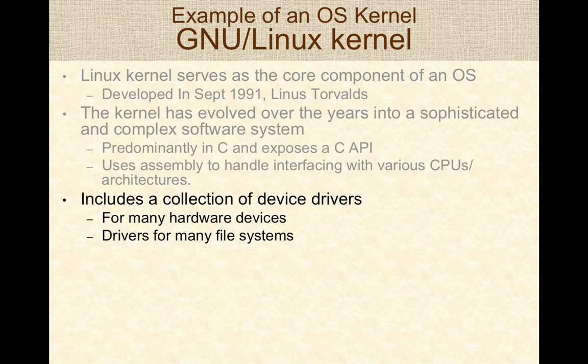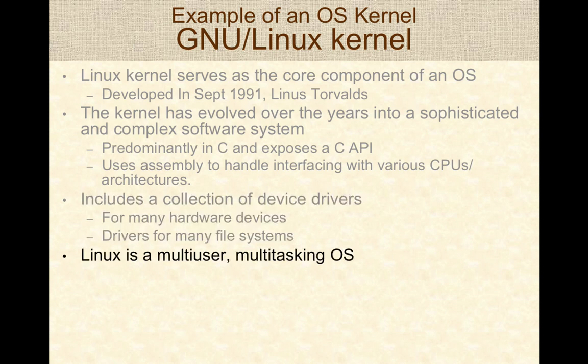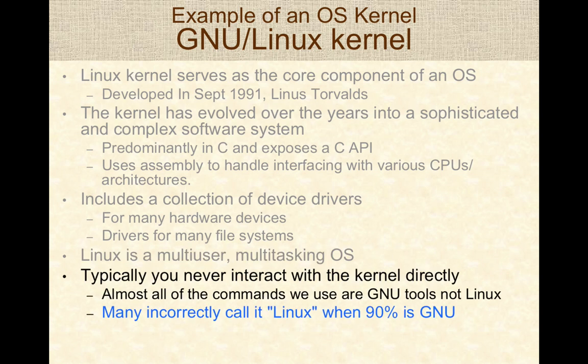The Linux kernel has evolved over years into sophisticated and complex software. It is predominantly written in C, with some assembly to interface with different hardware devices. It includes a collection of device drivers — sub-modules in the kernel used to manage interactions with specific devices, and each device has its own device driver. Linux is a multi-user, multi-tasking operating system, enabling multiple users to run different programs or processes on a single computer. The correct nomenclature is GNU Linux, but most people simply call it Linux.